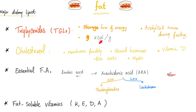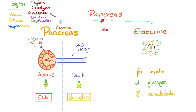When you read a food label and it says calories, they technically mean kilocalories. One calorie is a unit of energy equivalent to the heat energy needed to raise the temperature of one gram of water by one degree Celsius. The pancreatic enzymes that help digest fats include lipase, colipase, phospholipase, and cholesterol esterase.